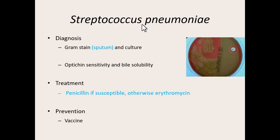To diagnose S. pneumoniae, we can gram stain a sputum sample — what you're coughing up from the lungs — and if we see gram-positive cocci in short chains, that's a sign. We can culture it on a blood agar plate and look for alpha hemolysis. One way to narrow it down further is to see if it's sensitive to the antibiotic optochin — we put a little optochin disc on the plate, and because it's sensitive, it will not grow anywhere near it. It's also soluble in bile — if you put it in bile, it will break down.